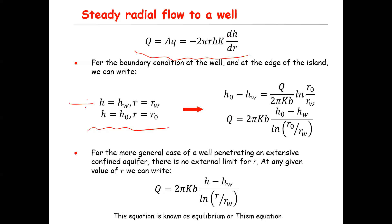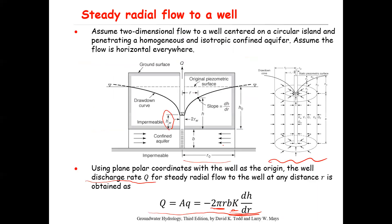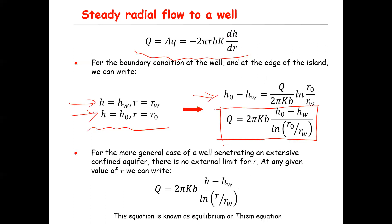Applying those two boundary conditions to the solution of the integral, you can obtain an equation for head, and since we're interested in Q, you can rearrange to express Q as a function of the other parameters. For the more general case of a well penetrating an extensive confined aquifer — where there is no external limit for r — you simply substitute r and h at any point of interest.